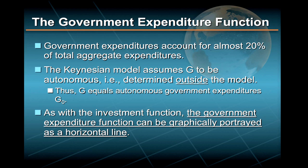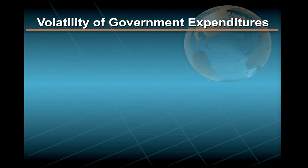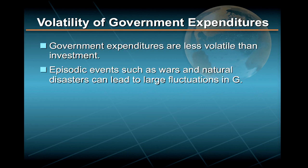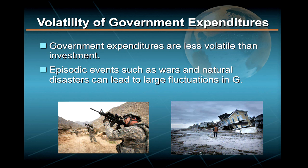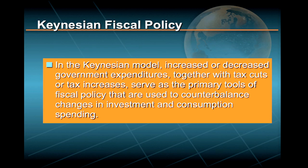As with the investment function, the government expenditure function can be graphically portrayed as a horizontal line. In general, government expenditures exhibit much less volatility than investment, although episodic events such as wars and natural disasters can lead to large fluctuations. In the Keynesian model, increased or decreased government expenditures, together with tax cuts or tax increases, serve as the primary tools of fiscal policy used to counterbalance changes in investment and consumption spending.